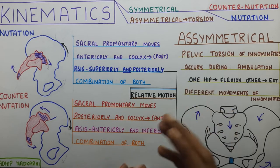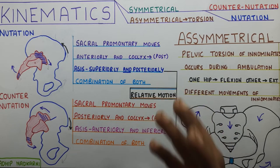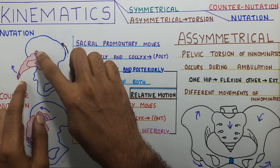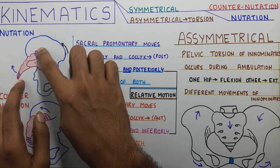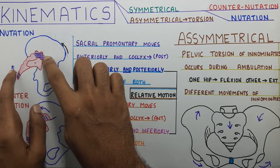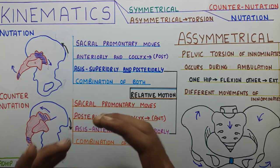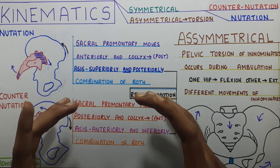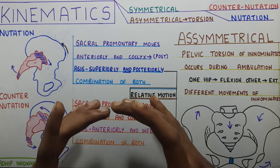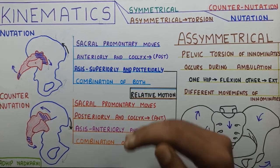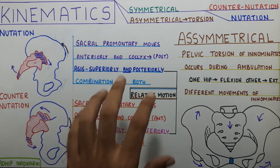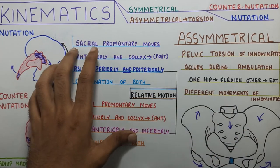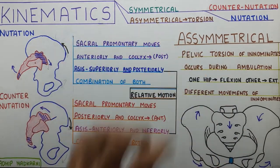Another point worth mentioning is that nutation also occurs during the delivery of a baby, when the sacrum goes posteriorly and there is an increase in the pelvic outlet diameter so that the baby can pass through. This will be discussed further in the next video with the kinetics, so stay tuned for that.